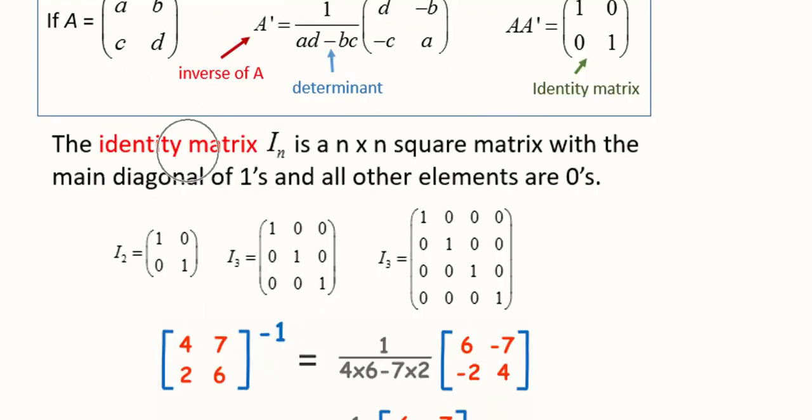This is an identity matrix and it is actually a square matrix because order is having equality of rows and the columns. Two rows, two columns, three rows, three columns and so on. And main diagonal has 1s and all other elements are 0.